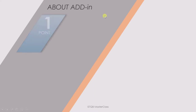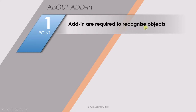We already discussed that add-ins are required to recognize objects — and whenever I say object, just remember that I am talking about front-end objects. Front-end objects are checkbox, radio button, dropdown, combo box, etc., and they can be made using HTML, Java, .NET, or any other technologies. So, to recognize different types of objects, we need different add-ins.